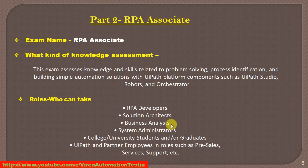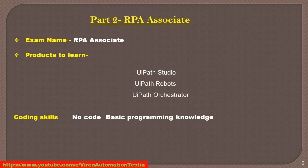Those who are currently working in jobs and want to update their skills in RPA automation can also go for this RPA certification. UiPath and partner employees in services and support — every type of employee can take the UiPath certification exam. The products you need to learn for the RPA Associate are UiPath Studio, UiPath robots, and UiPath Orchestrator. If you know all these RPA products, you are eligible and can easily clear this paid examination.